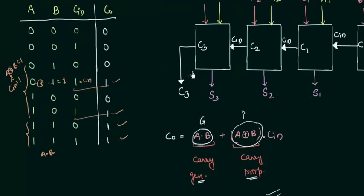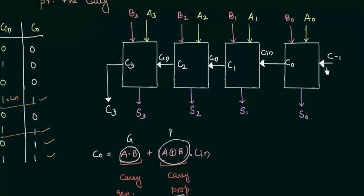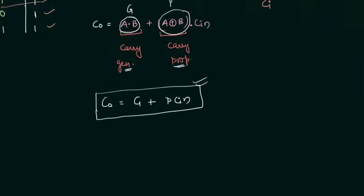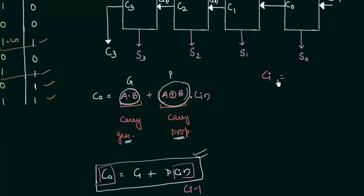your carry output. Similarly, if C_0 is your carry input, C_1 is your carry output. So I can say that C_i is there if I talk about this part. And C_in will be what? C_{i-1}. So all we are doing here is the generalization of this equation. So C_i, and we are having G OR P·C_{i-1}. We have generalized this equation.